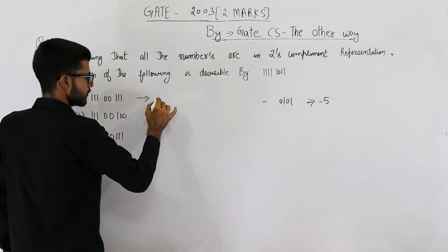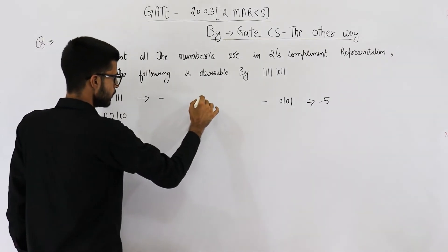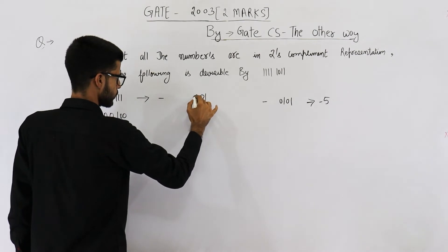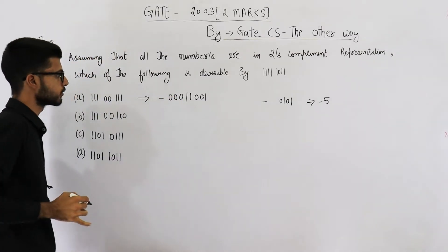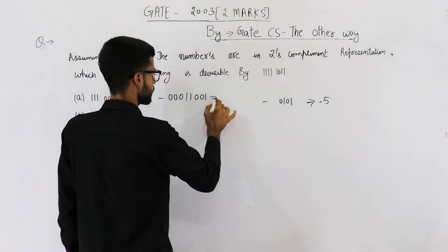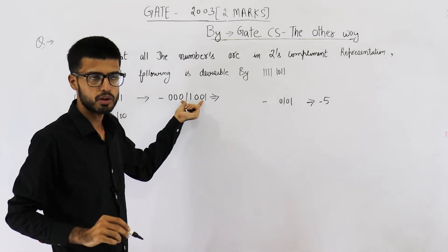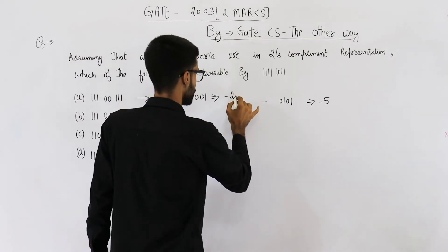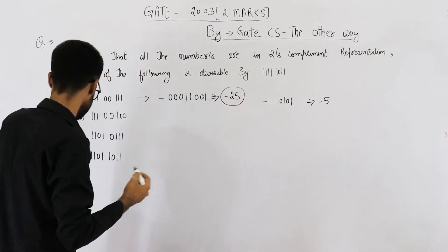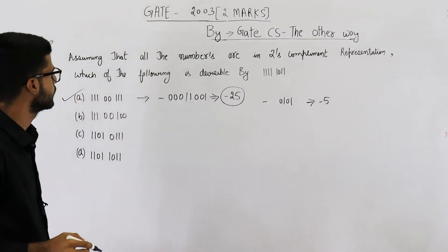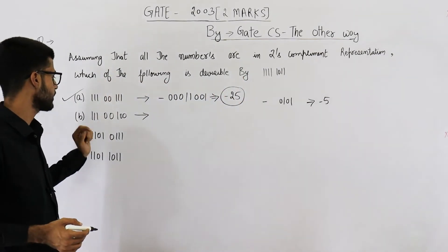Now let us check option A. This number is negative, so put a minus sign and take the two's complement of the given binary pattern. The two's complement works out to give us: six times two is twelve, twelve times two is twenty-four, plus one is twenty-five. So option A is minus twenty-five. Minus twenty-five is divisible by minus five, so option A is correct.